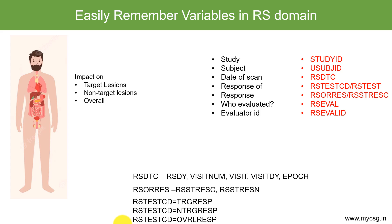Some key RSTESTCD values to remember for oncology trials: TRGRESP stores the response of target lesions overall; NTRGRESP (N for non, TRG for target, RESP for response) stores the non-target response; and OVRLRESP stores the overall response — a combined response of target and non-target lesions. This is how you can easily remember the test CDs and variables needed in the RS domain. Thank you for watching and keep learning.